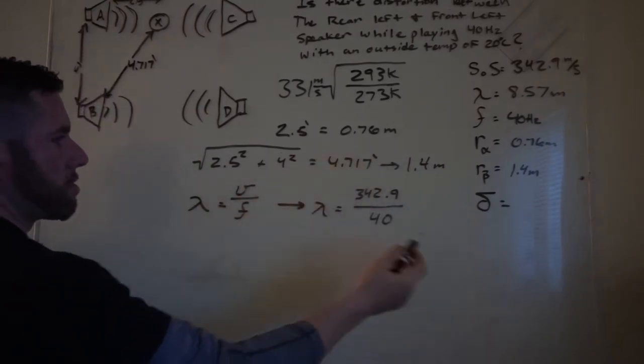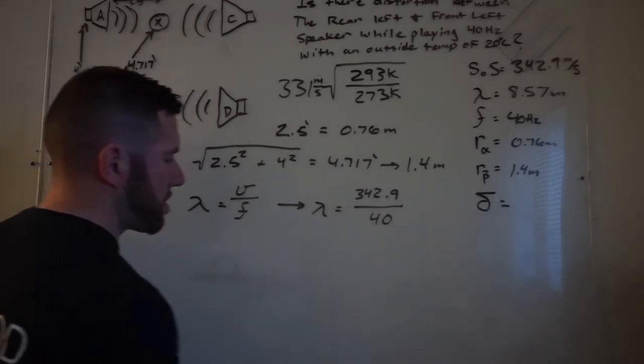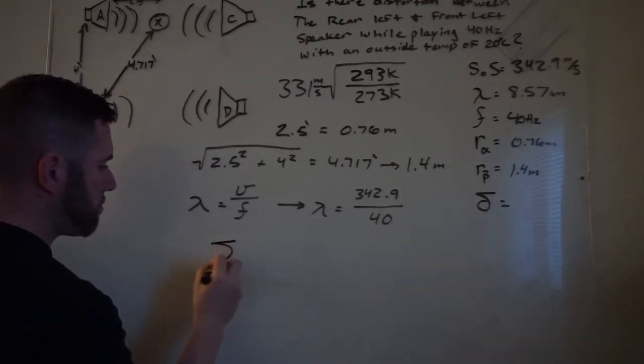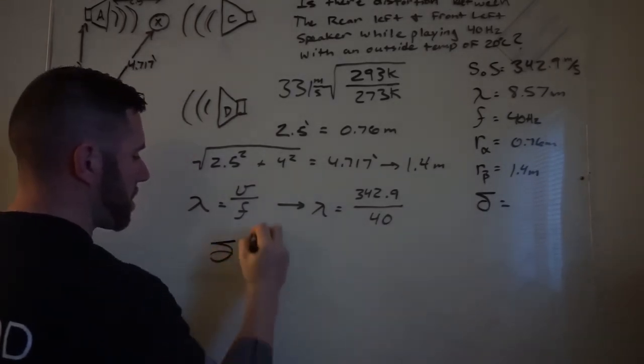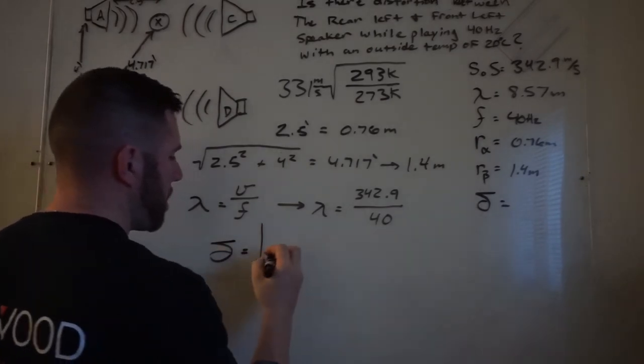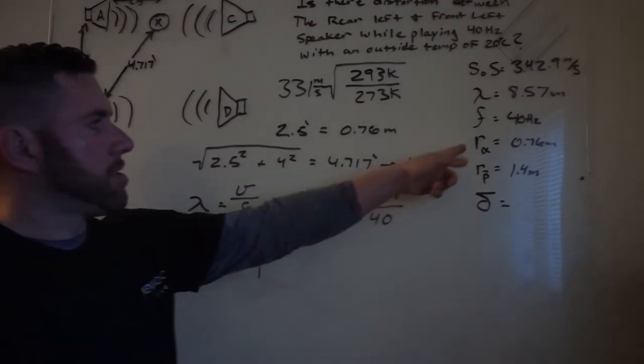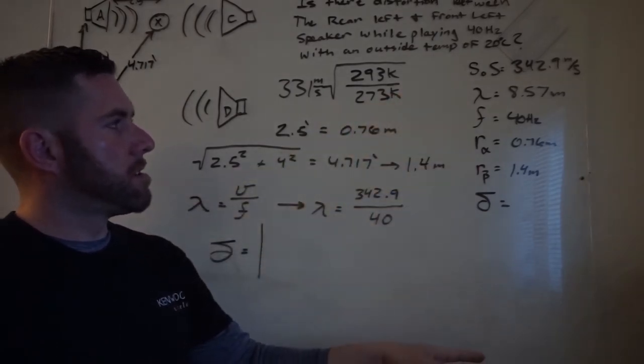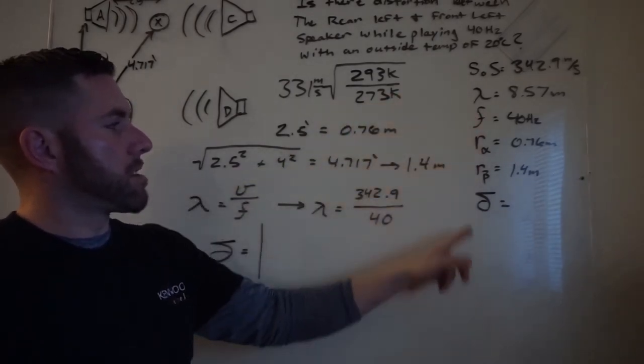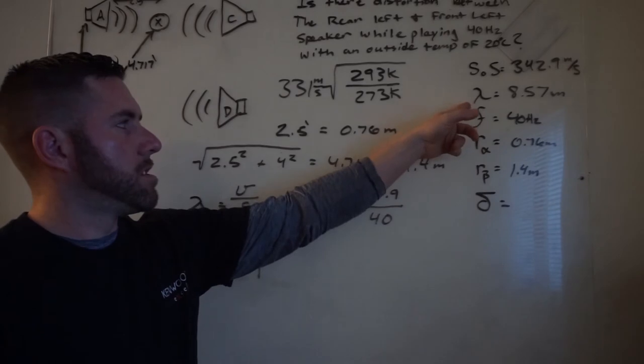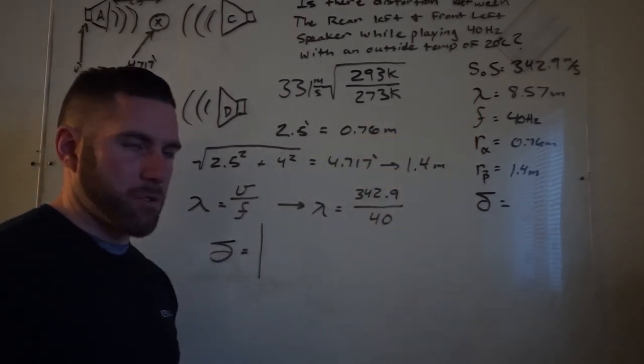Alright, now that we got that, we need to figure out if it's actually distorted. And this is an absolute value bars. Now, what you're going to do is you're going to take the radius of one speaker times the wavelength, and then the radius of another speaker times the wavelength. And you're going to subtract them.